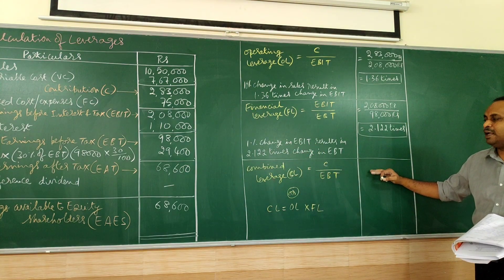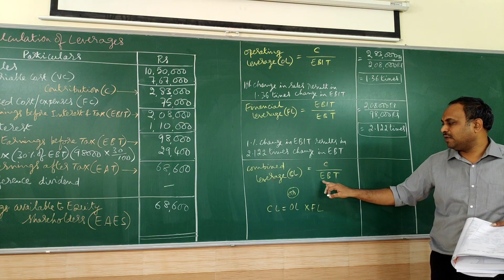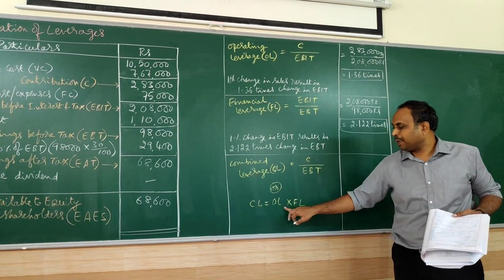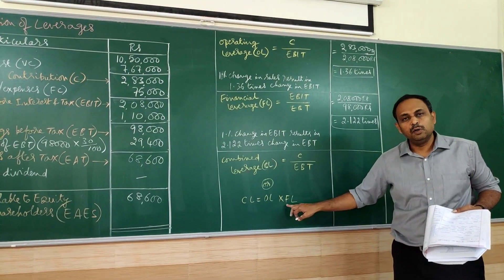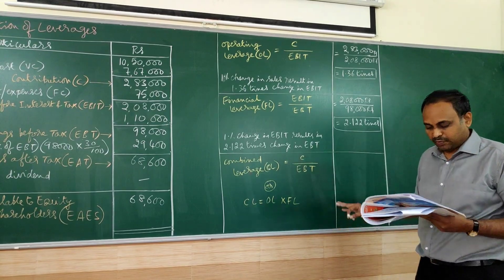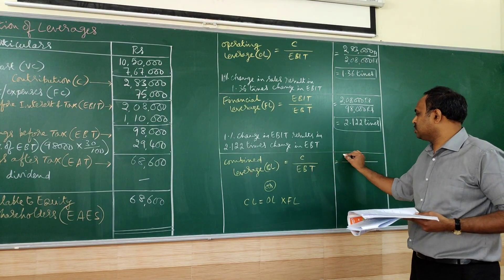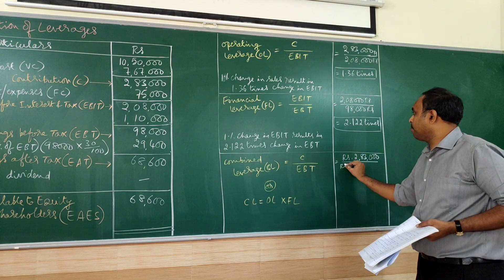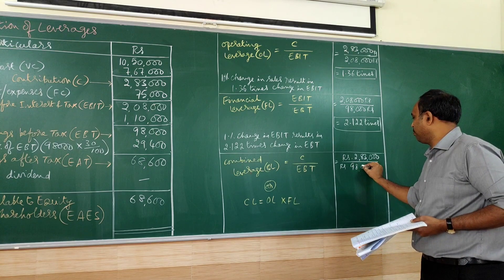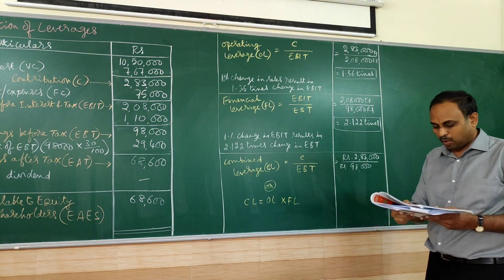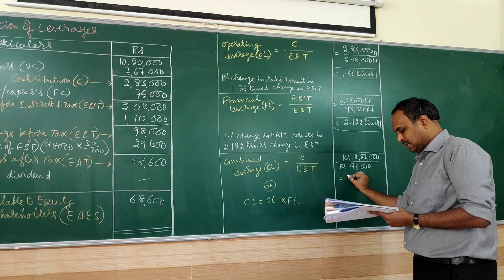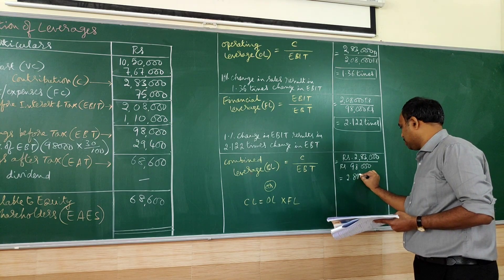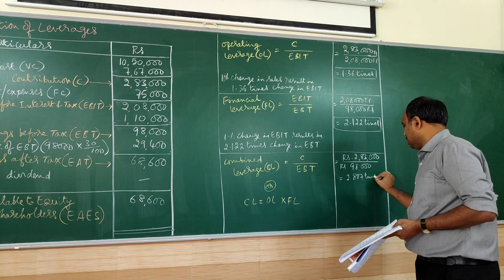Coming to the combined leverage, there are 2 types of formula: C divided by EBT, or we can combine operating leverage into financial leverage. We can do both methods, but the first method is the best. C divided by EBT. Answer will be same almost in both the methods. Unless there are decimals, you are not going to find much of a change.